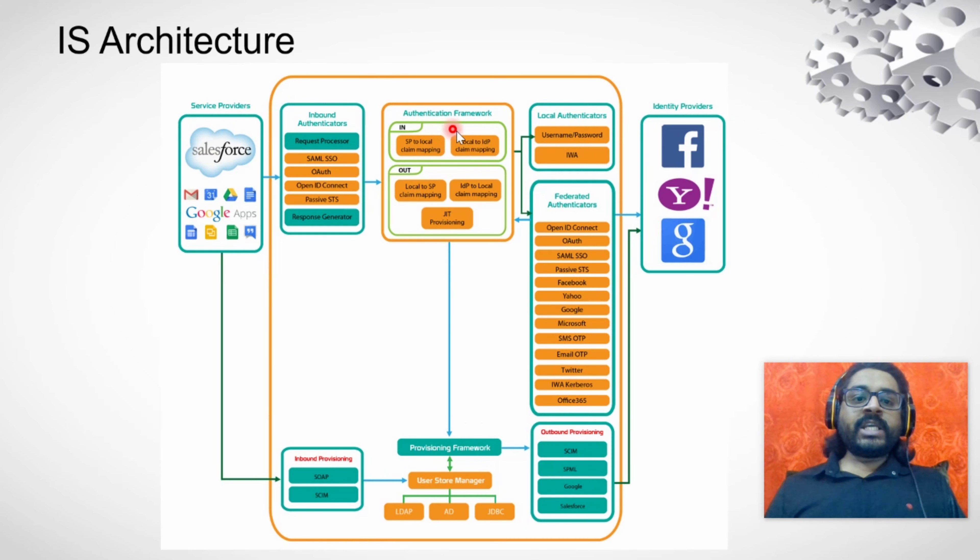As you can see, authentication framework has two sub components called in and out. These are the different types of provisioning. So the authentication framework talks to provisioning framework. First, let's talk about what is provisioning. Provisioning is storing the credential of the just authenticated user to an identity provider.